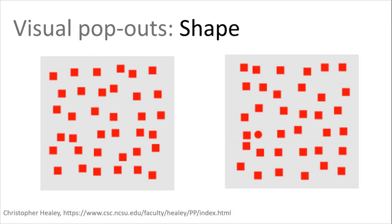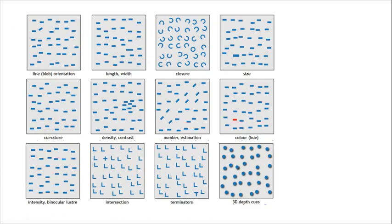And I hope you notice that this property required a little more work than the color example. You actually had to scan through it, right? But it is still very obvious to see this one red circle sticking out.